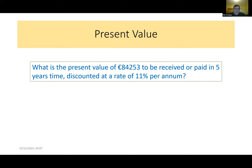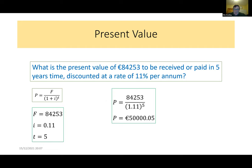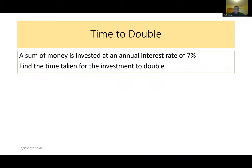For a present value example: what is the present value of €84,000 to be received in five years, discounted at 11% per annum? Using P equals F over (1 plus i) to the t, where F is 84,253, i is 0.11, and t is 5 years, we arrive at €50,000. So if we invest €50,000 now, it will accumulate to €84,253 in five years at 11% interest.